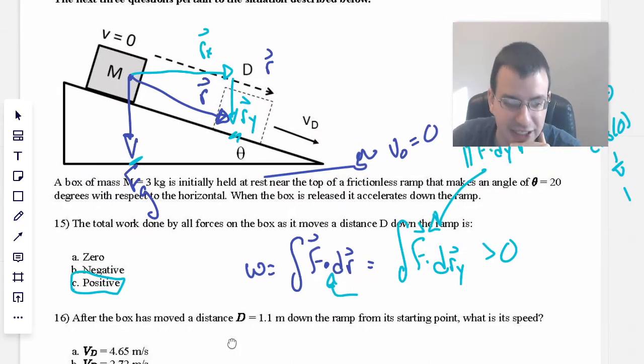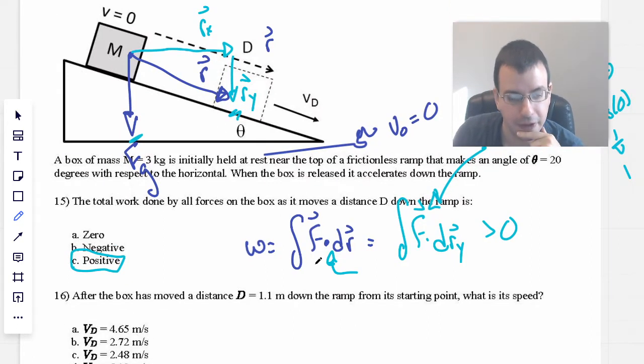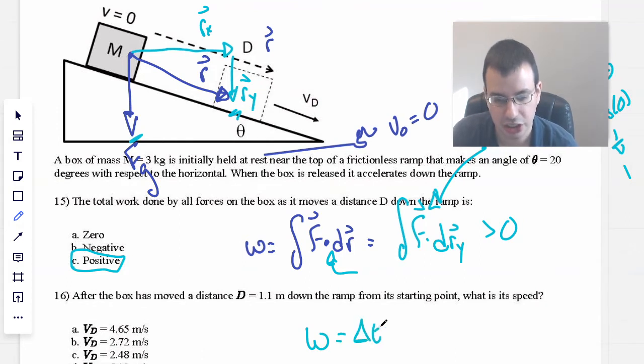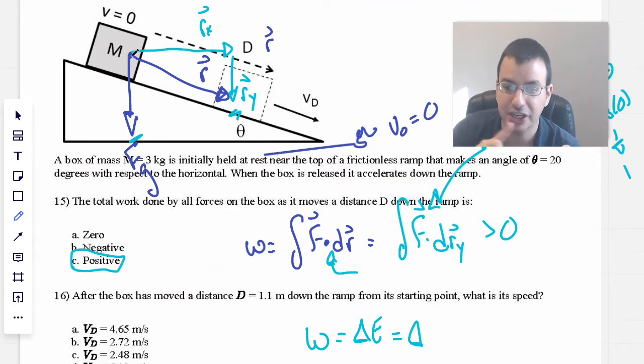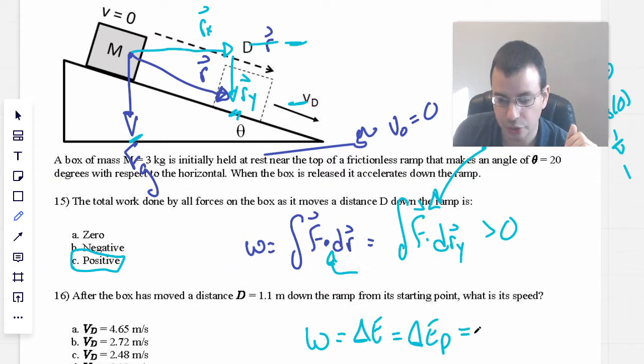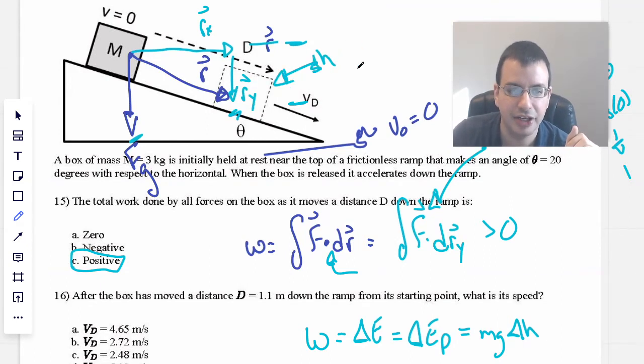After the box has moved a distance d equals 1.1 meters down the ramp from the starting point, what is its speed? So work is a change in energy. In this case, we're going to have a change in potential energy to kinetic. So we're going to convert the potential energy of this height to kinetic energy at that height, which will be mass times gravity times change in height, delta h.